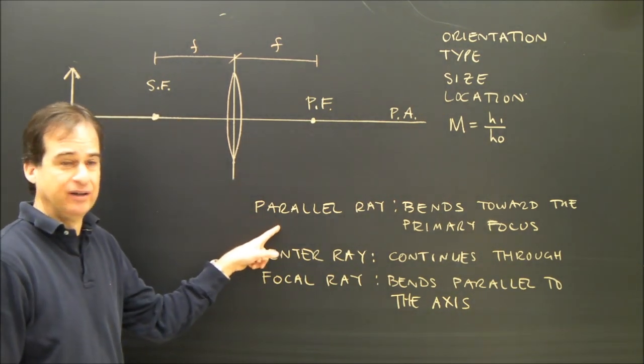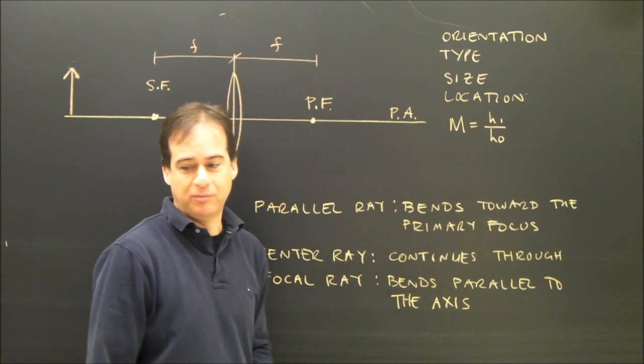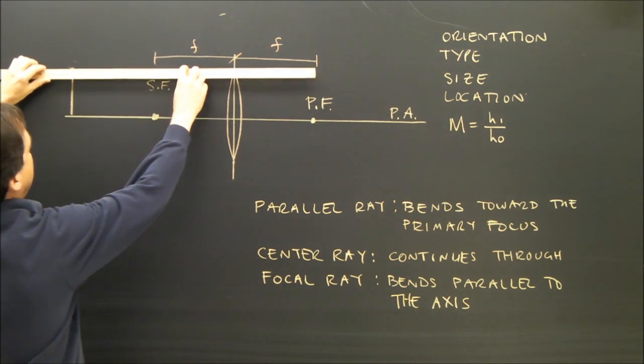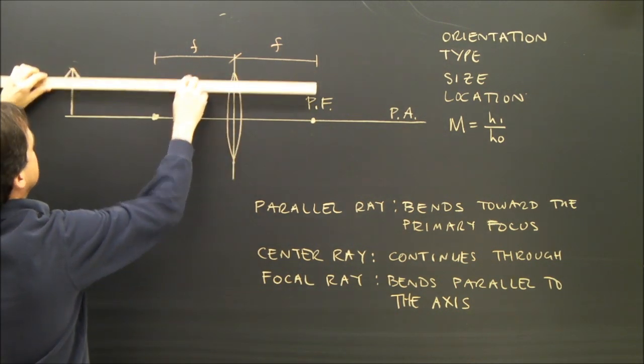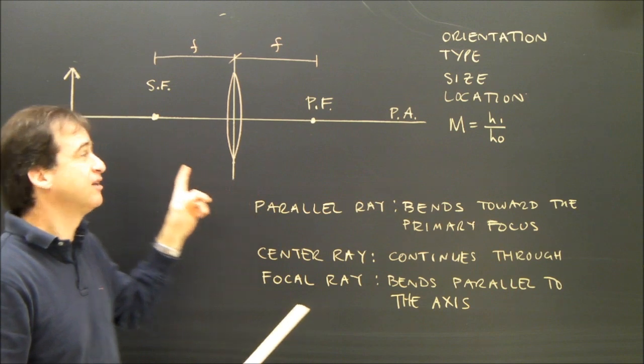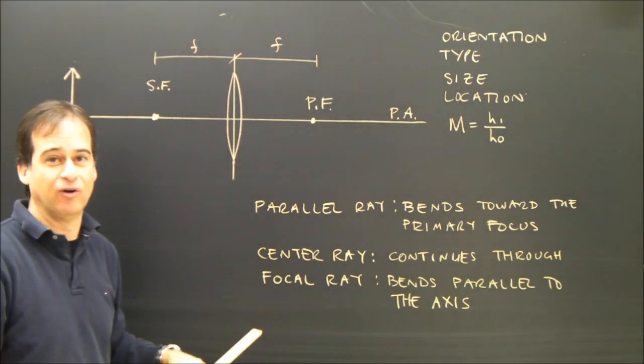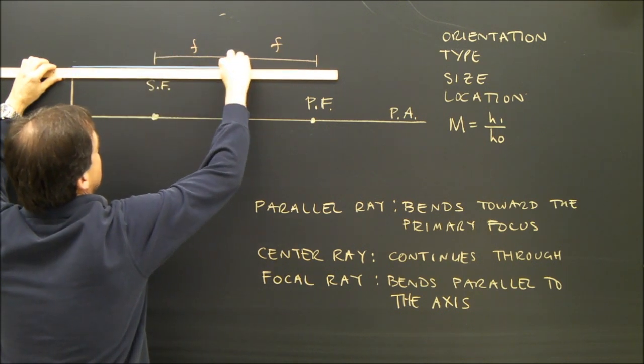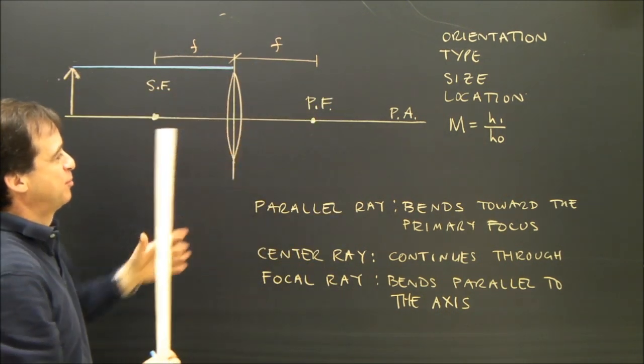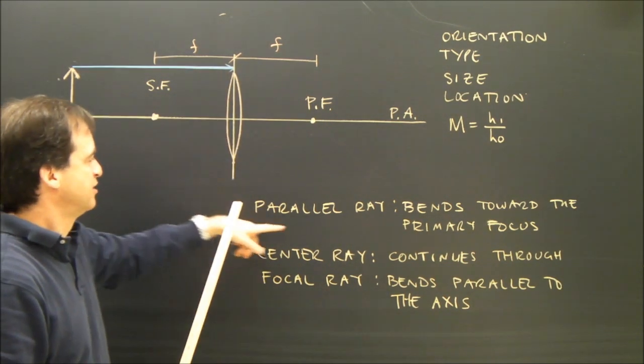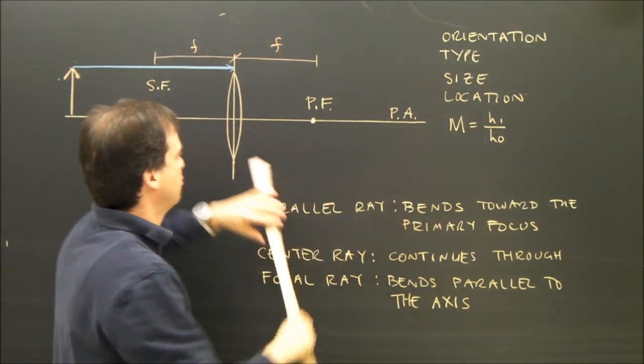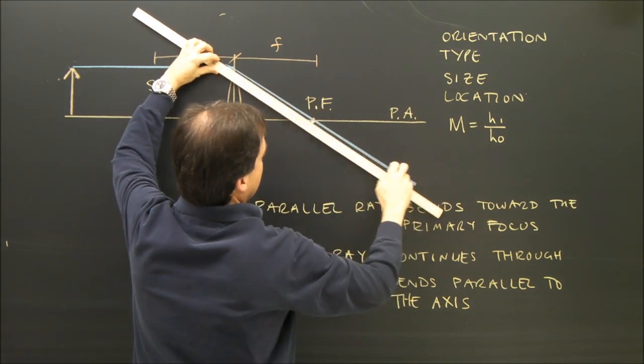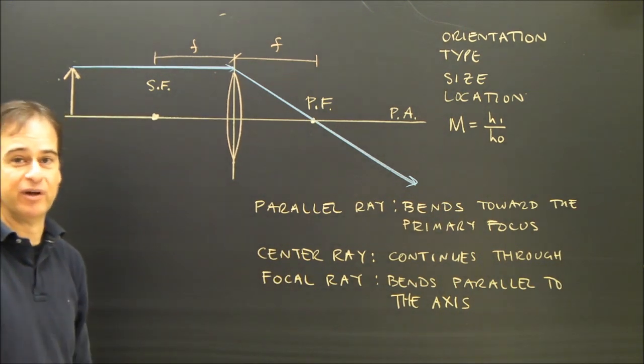The parallel ray. A parallel ray bends towards the primary focus. So I take my ruler and I draw a ray parallel to the principal axis. From the top, what I'm going to do is locate that point, the point of my arrow or my object. So I take this and I draw a line parallel to my principal axis. And that line is the parallel ray, and it bends towards the primary focus. So I'm going to bend it through the primary focus and continue it right on through. That's where that light ray goes.